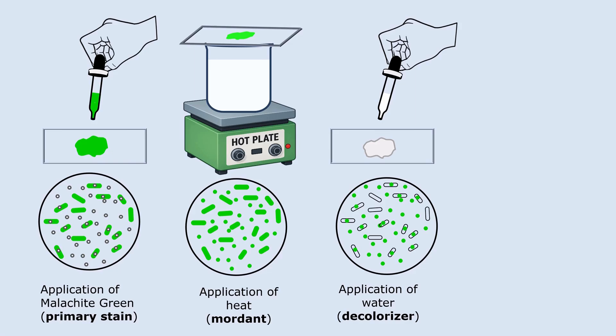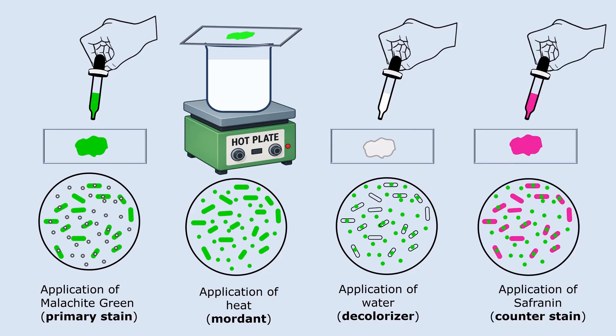During counterstaining, we apply safranin as a counterstain. Now colorless vegetative cells absorb the safranin and turn red or pink. But endospores stay green because they have already locked in the primary dye. This is how Schaeffer-Fulton method helps us clearly distinguish endospores from the rest of the bacterial cell.